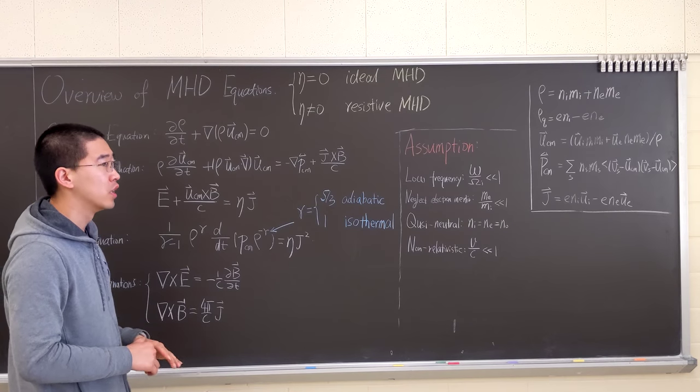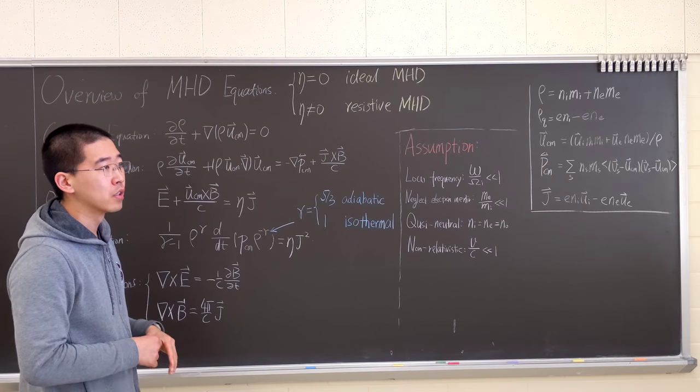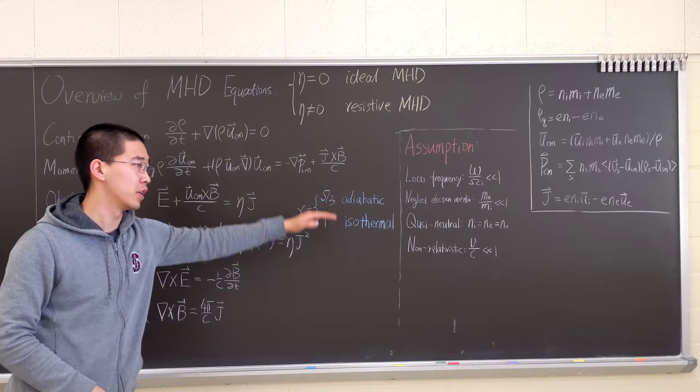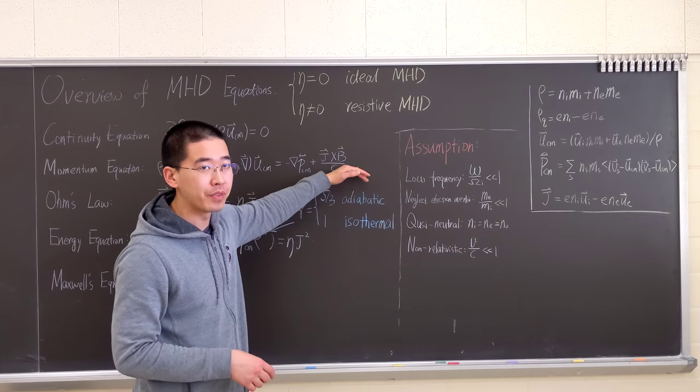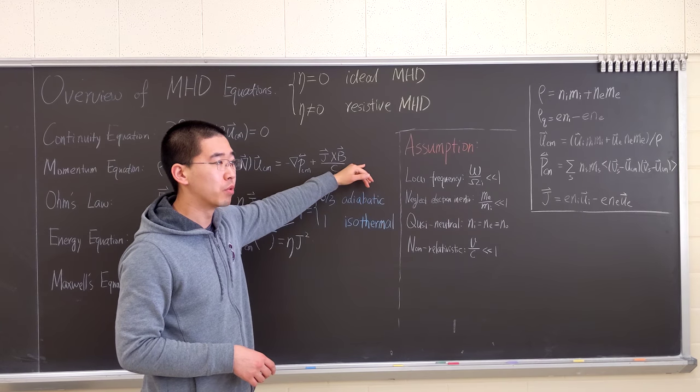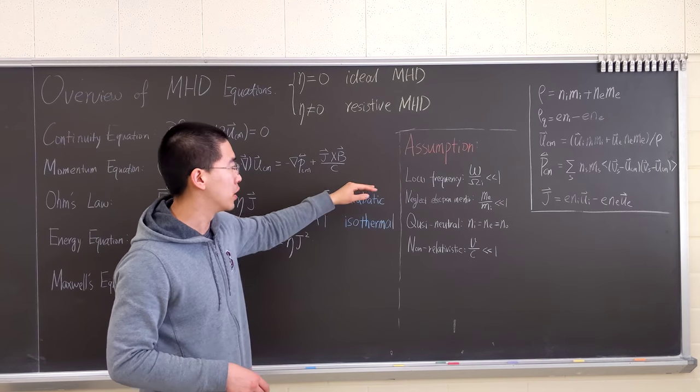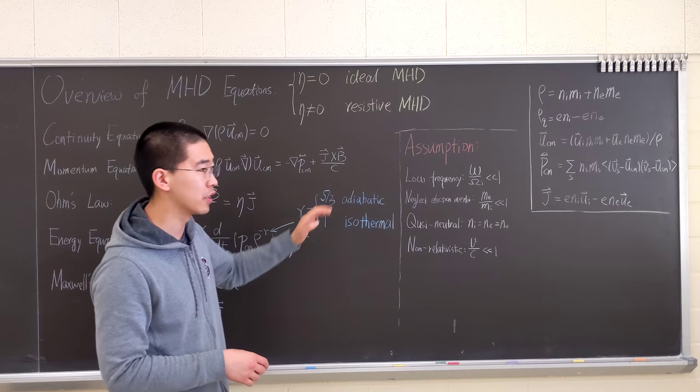As you can see, this is pretty much the fluid equation. The normal fluid equation is plus J cross B. Because we impose—it should have had a rho Q E here, but we impose quasi-neutrality when that term is negligible.